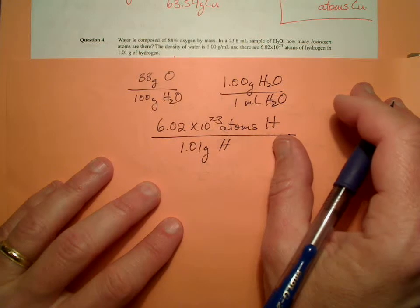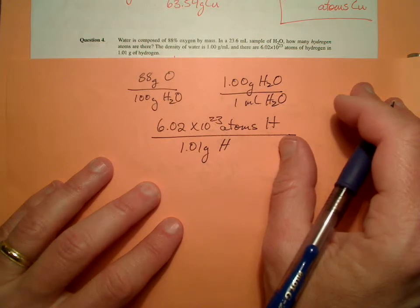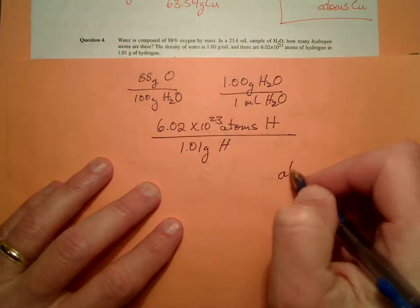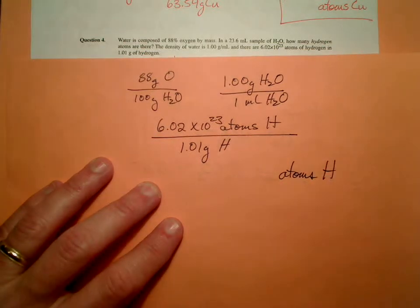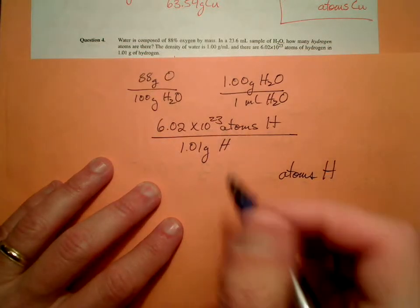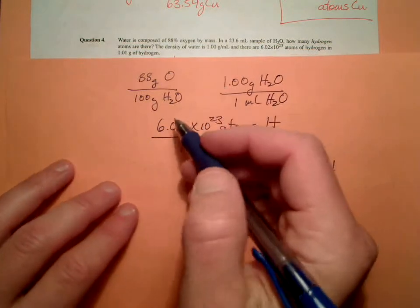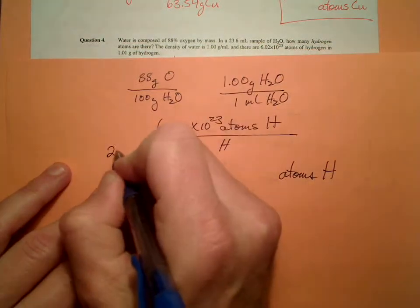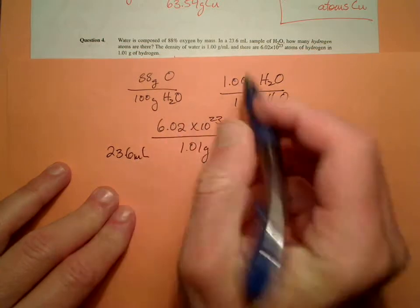And what is it asking for? Units of how many hydrogen atoms? So we know we're shooting for atoms of hydrogen. So the only other thing, these are all conversion factors. The only other thing we have in this problem is the 23.6 milliliters. Milliliters of what? Water.